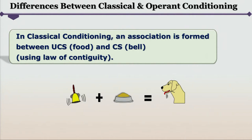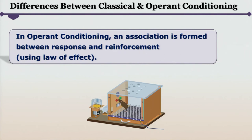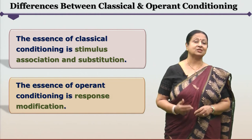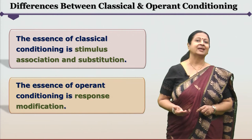In classical conditioning, the experimenter wants to build an association in the mind of the organism between the natural stimulus and the neutral stimulus — the natural stimulus UCS (food) and the neutral stimulus CS (Bell) — using the law of contiguity. Contiguity means nearness, so the experimenter presents both together so that the organism can form an association between the two.